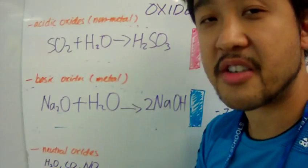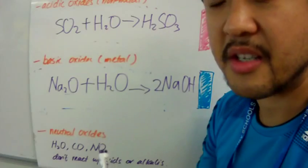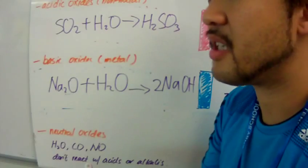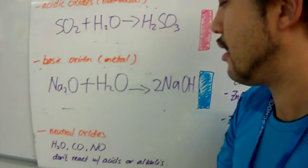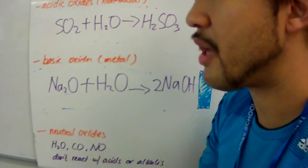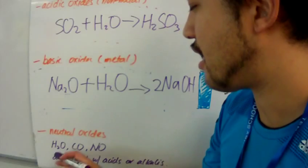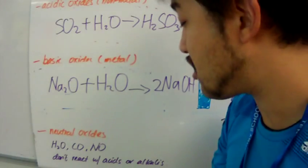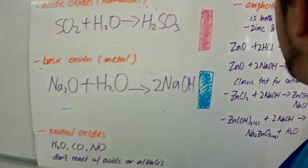The third category of oxides are neutral oxides. Neutral oxides do not react with acids nor bases. They don't really give up any of those red or blue characters or properties. They won't show that character. Examples of neutral oxides are water, carbon monoxide, and nitrogen monoxide. They don't react with acids or alkalis.